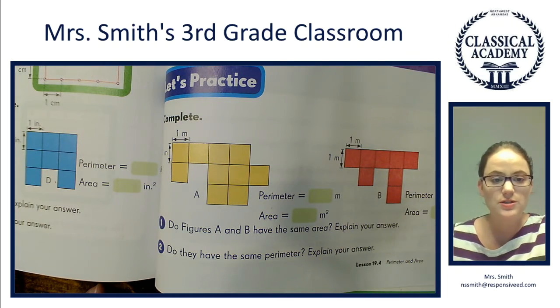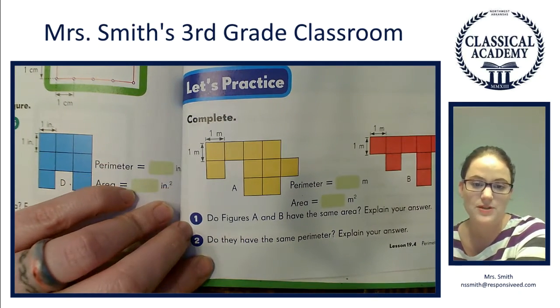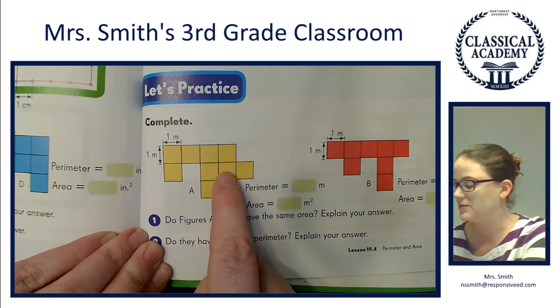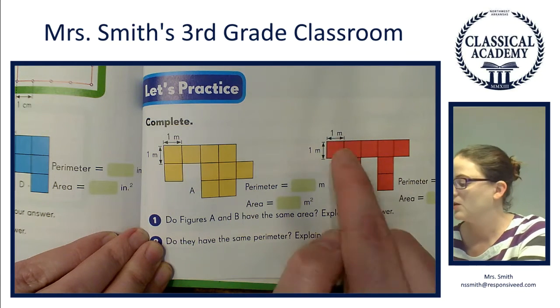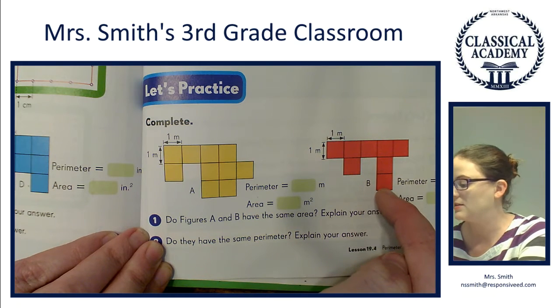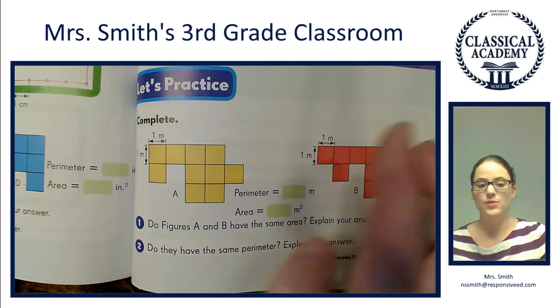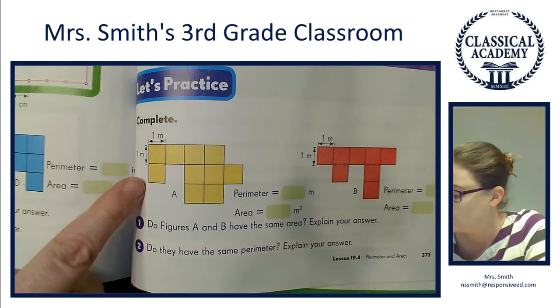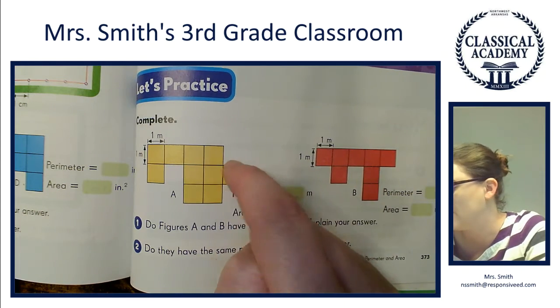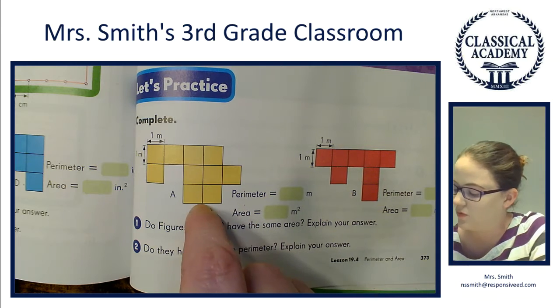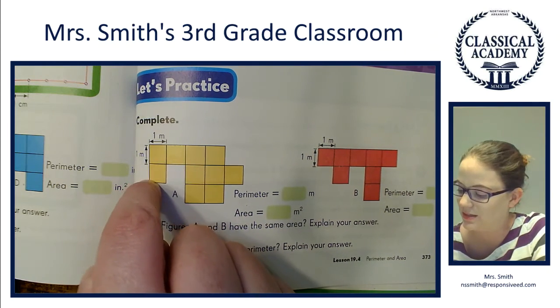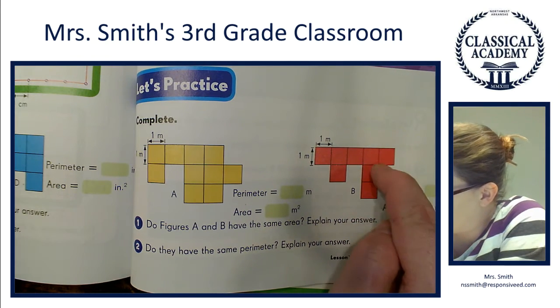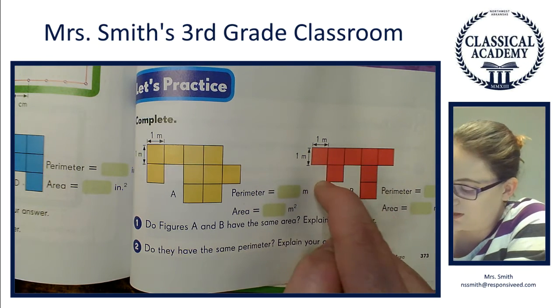Complete: Do figures A and B have the same area? Explain your answer. Well, let's check it out. 1, 2, 3, 4, 5, 6, 7, 8, 9, 10 area for A. 1, 2, 3, 4, 5, 6, 7, 8 for B. So we have 10 and we have 8 for area. Do they have the same area? No. Let's try the next one: 2 + 4 is 6, 7, 8, 9, 10, 11, 12, 13, 14, 15, 16, 17, 18. 1, 2, 3, 4, 5, 6, 7, 8, 9, 10, 11, 12, 13, 14, 15, 16, 17, 18. They have the same perimeter.